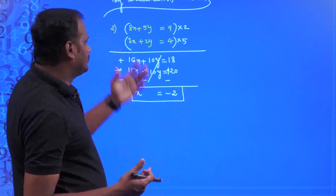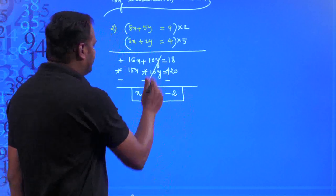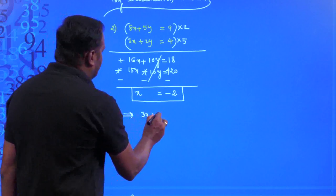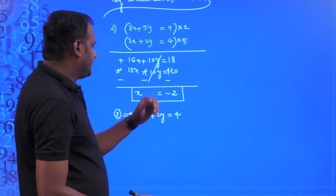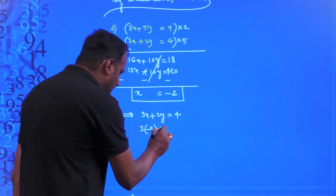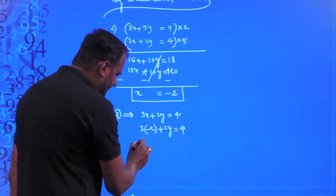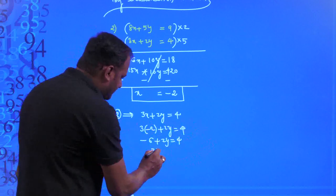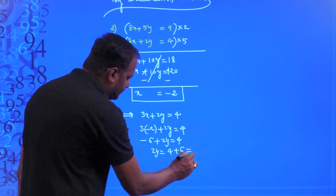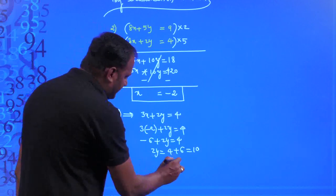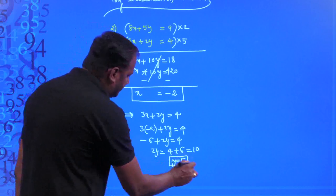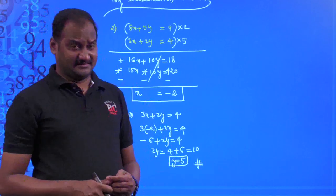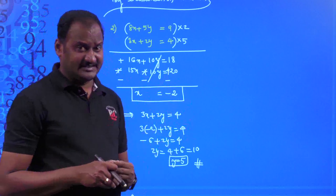After getting x = −2, substitute into the second equation 3x + 2y = 4 (simpler coefficients): 3(−2) + 2y = 4, so −6 + 2y = 4, giving 2y = 10 and y = 5. The elimination method is comparatively easier than the substitution method.